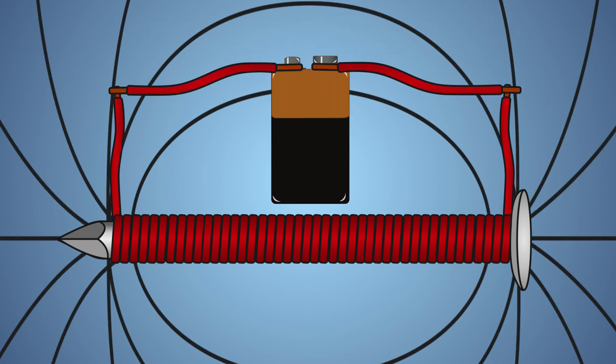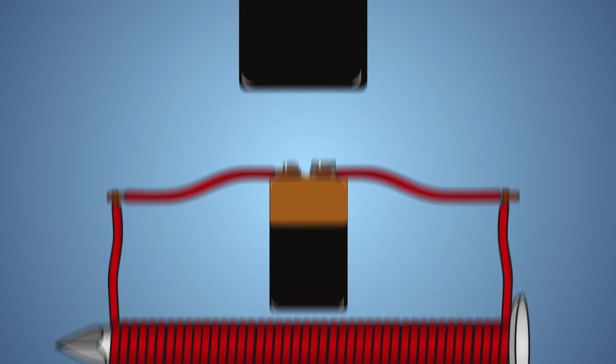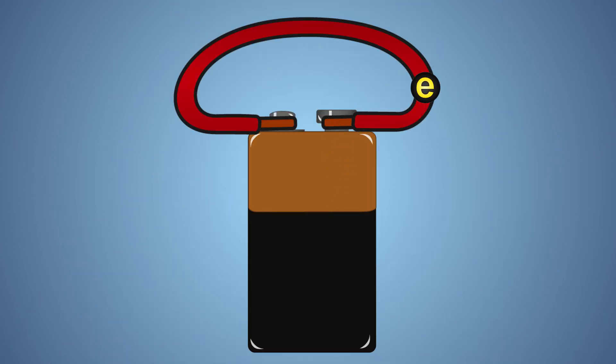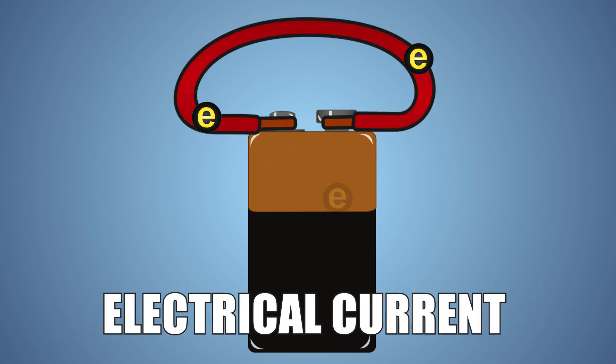When we connect our wire to a battery, we create a flow of negatively charged electrons, which travel from the negative to the positive side of our battery. This flow is called an electrical current. As an electrical current flows through a wire, it generates a magnetic field.